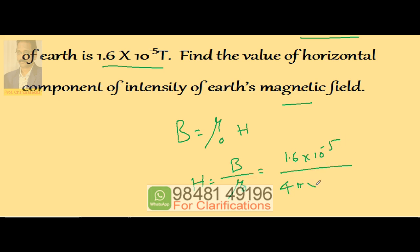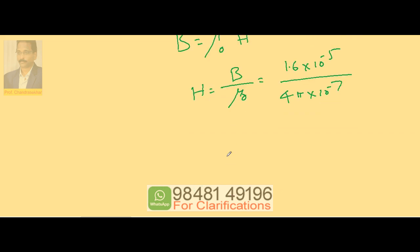μ₀ is 4π × 10⁻⁷. So 1.6 divided by 4 is 0.4. So the value becomes 0.4 × 10⁻⁵ × 10⁺⁷ because